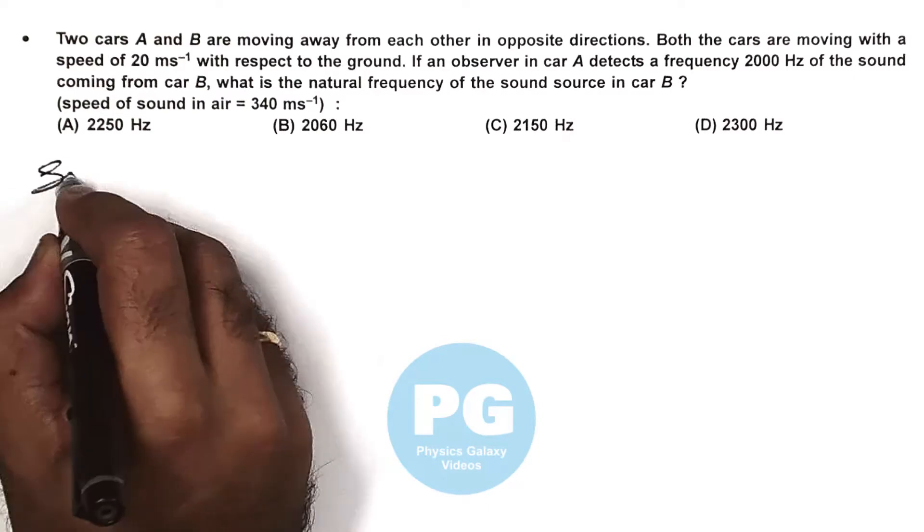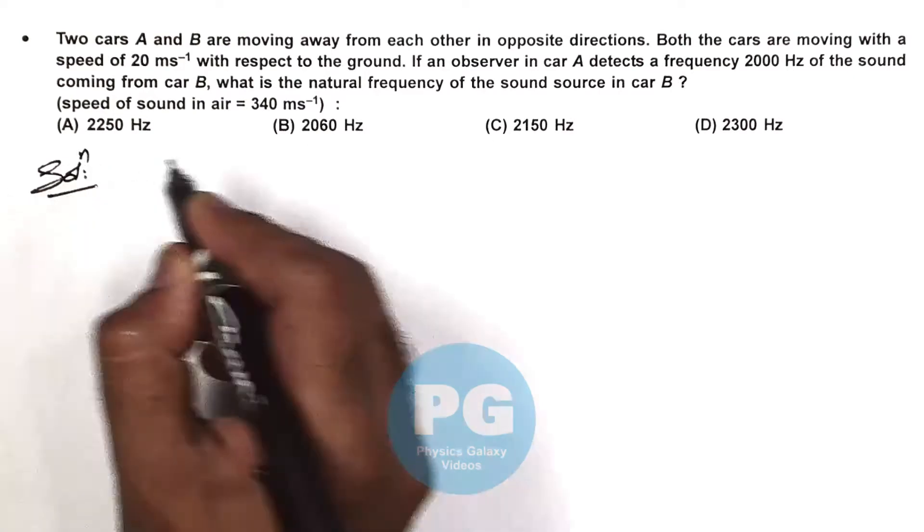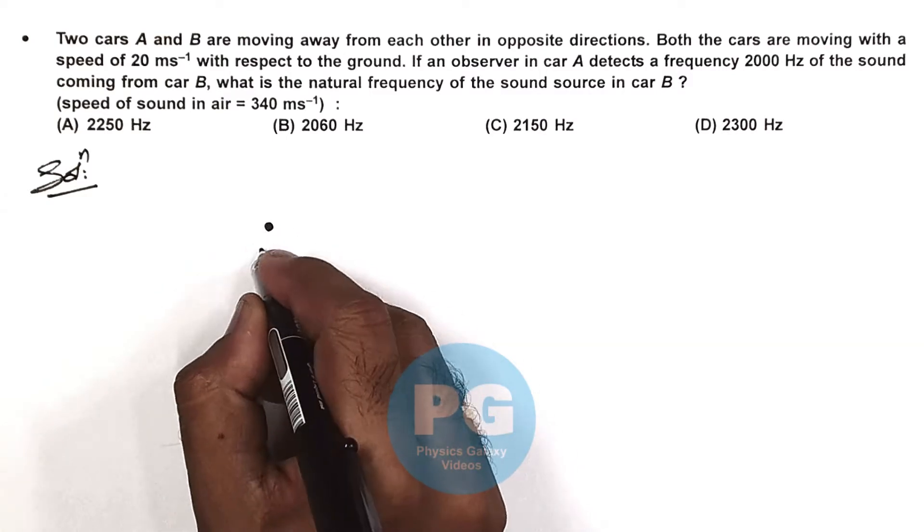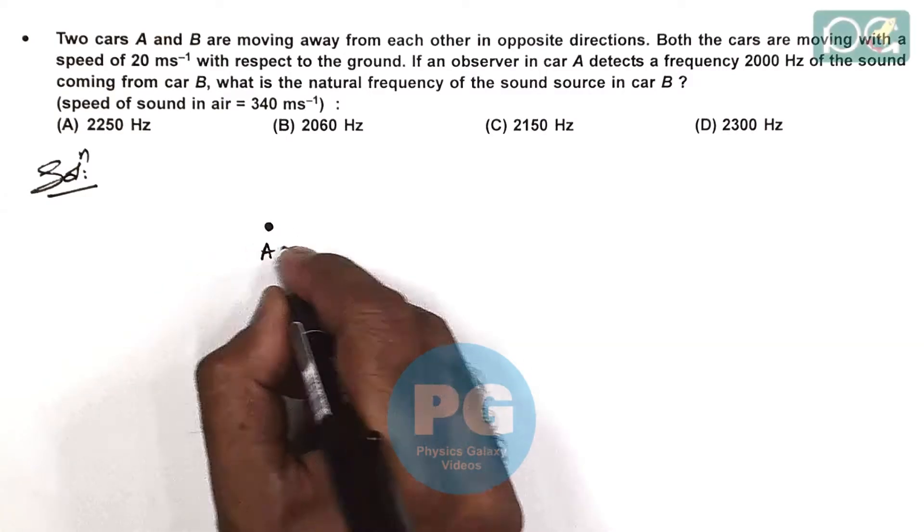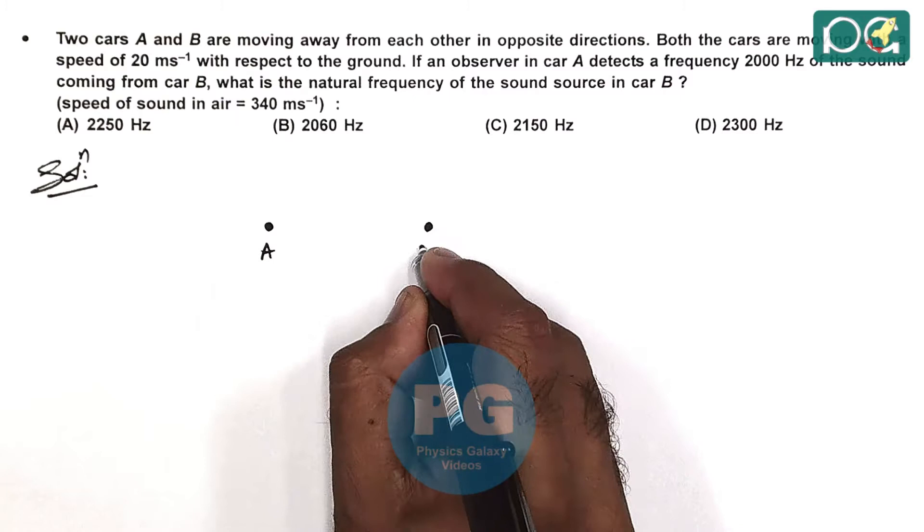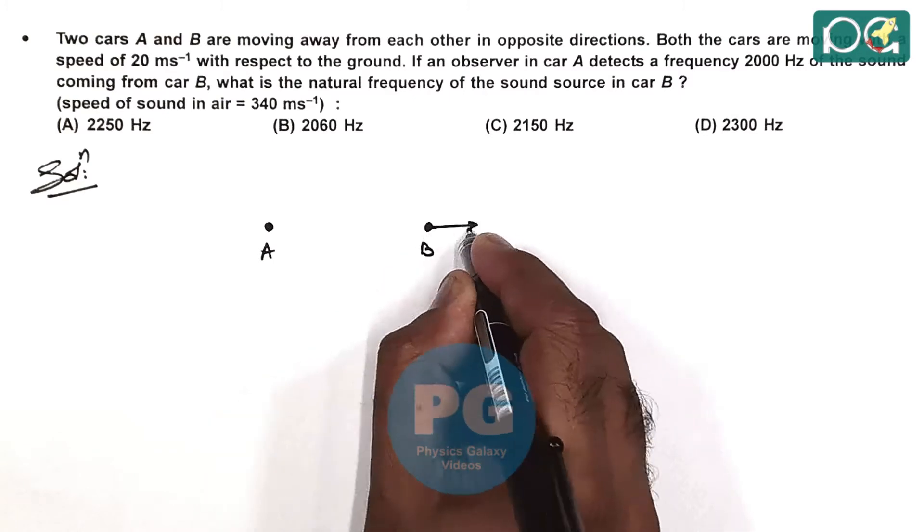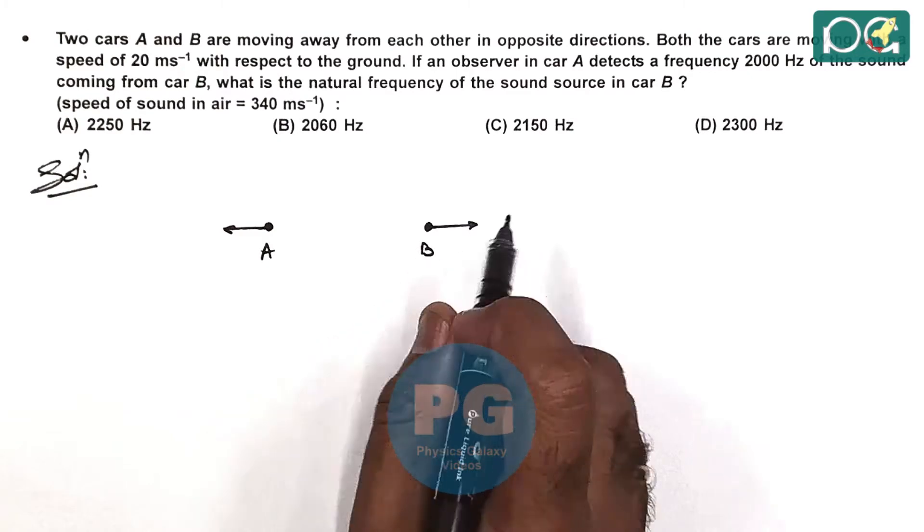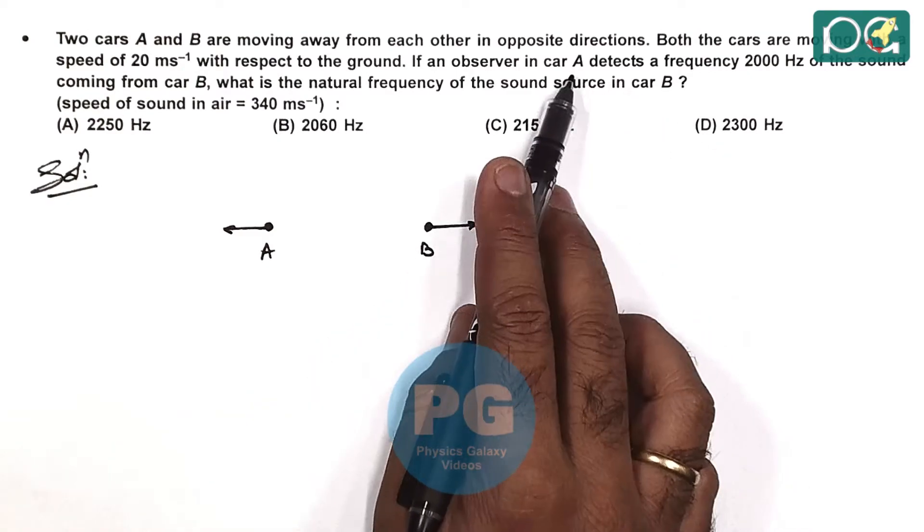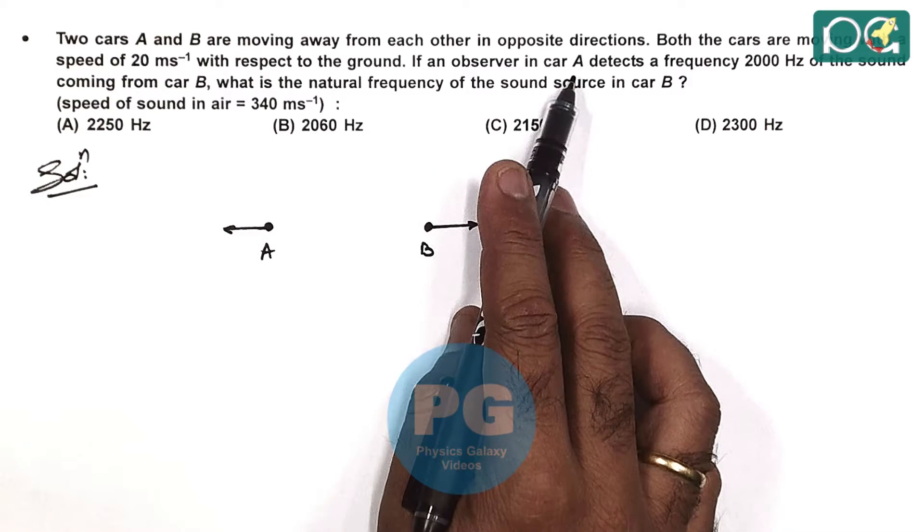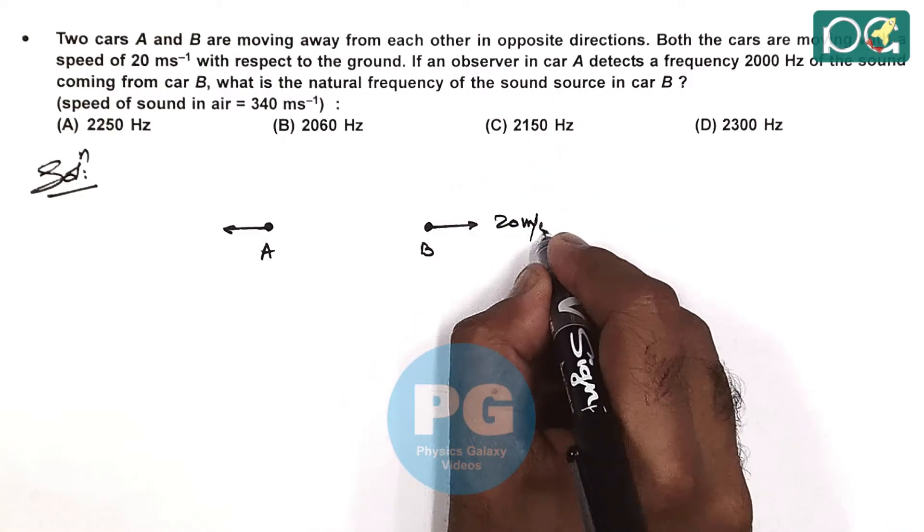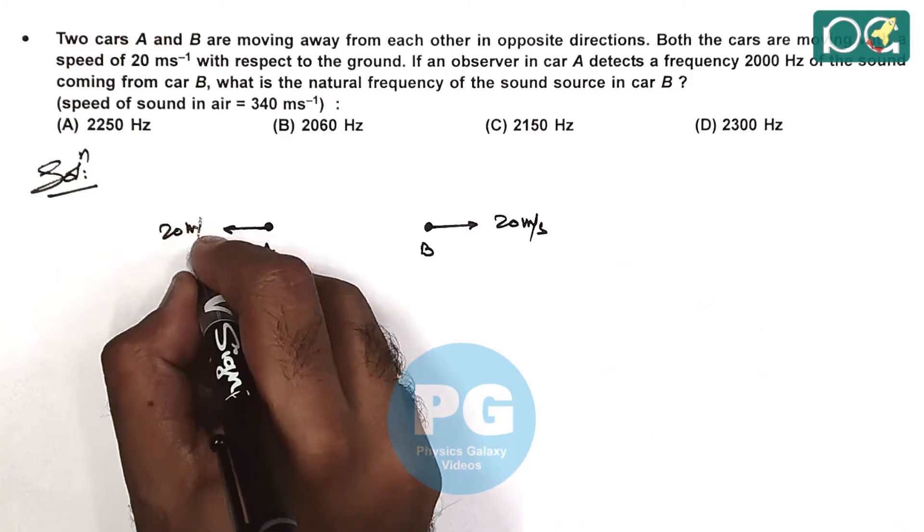Here the two cars A and B are moving away from each other. B is the source and A is the observer. In this case, both are moving with velocities of 20 meters per second.